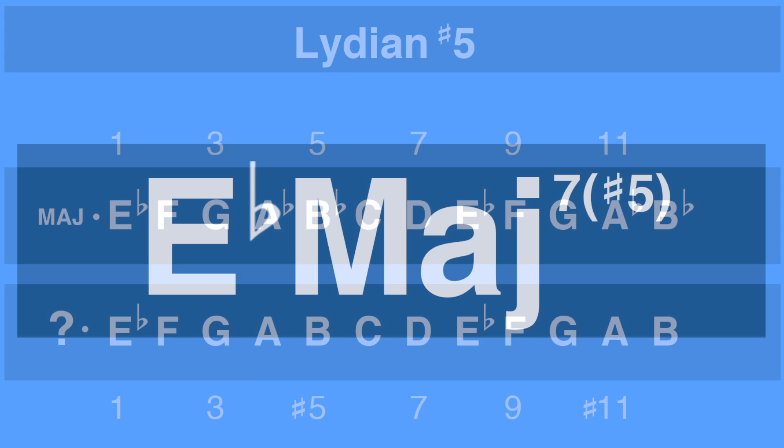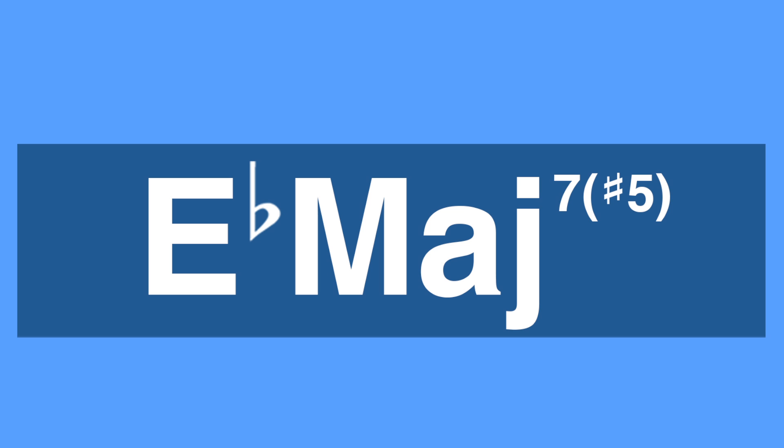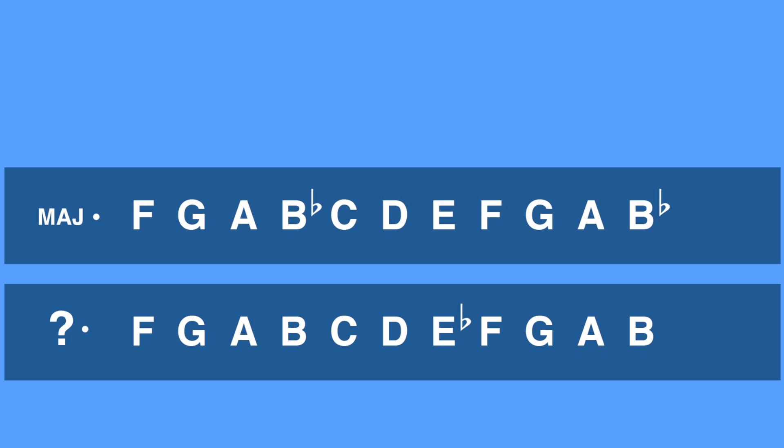The next mode is extensively used by improvisers and has interesting properties that we will be addressing in the substitution and function unit. We also need to extend this scale to the eleventh. Our fourth mode is F, G, A, B, C, D, E-flat, F, G, A, and B. F major is F, G, A, B-flat, C, D, E, F, G, A, and B-flat.